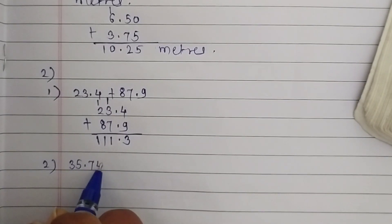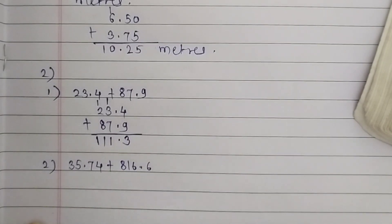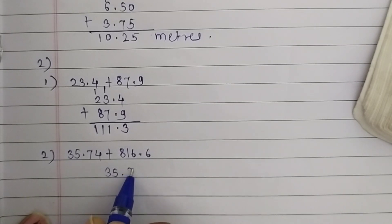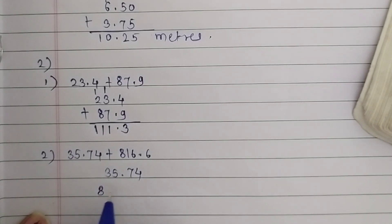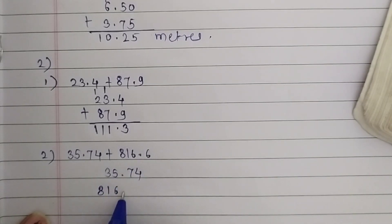The second question is 35.74 plus 816.6. We have to arrange the numbers so the places and decimal points come one below the other. 816.6 has a hundreds place, so write 8, then below the tens place write 1, then 6, then the decimal point, then 6.